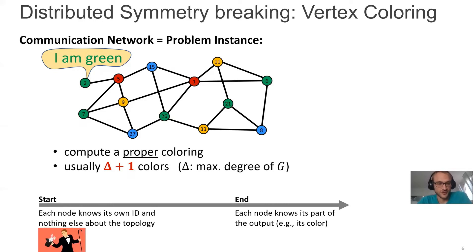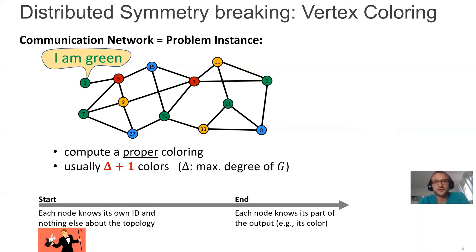One thing that hasn't gotten much attention but will be important in this talk is the initial knowledge of a node and what can you do with it. Some things you can solve truly without any communication: for example, the problem of every node outputting a unique ID — you know your own ID, you just output it. Or if you want to compute a coloring and the number of colors equals the size of the ID space, everyone can output their ID and you have a coloring. This will play a role in the technical parts later.